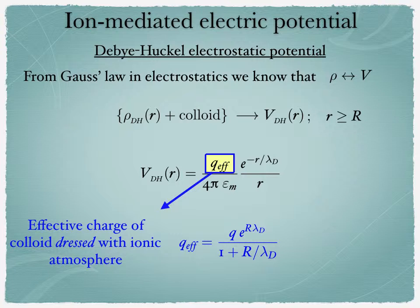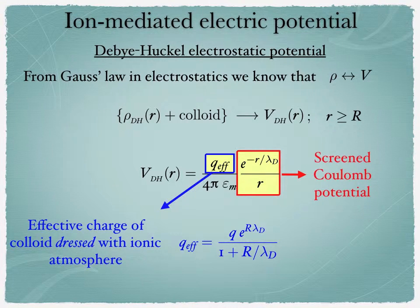This Debye-Huckel potential reads as q effective divided by 4 pi times epsilon m and then times exponential minus r divided by lambda D divided by r. In this particular term, the q effective has to be seen as an effective charge of the colloid as if it were dressed with the ionic atmosphere. It reads as q, the total charge of the colloid, exponential r divided by lambda D divided by 1 plus r divided by lambda D. The right-hand side term is the most important one. It corresponds to the screened Coulomb potential.